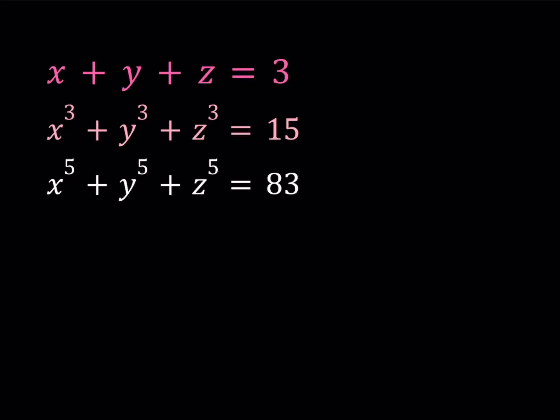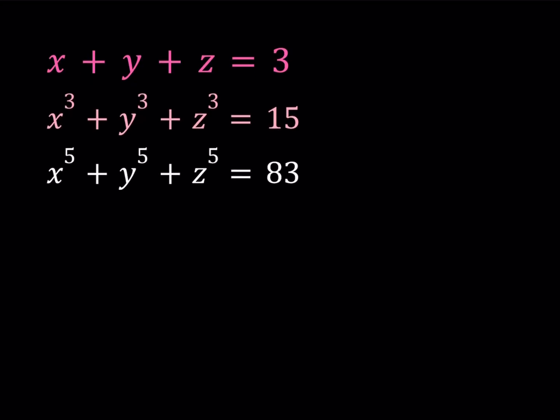Hello everyone. In this video we're going to be solving an IMO long list problem from 1971. This problem was proposed by Germany at the time. So we have the following system and we're going to be finding the values of x, y, and z.